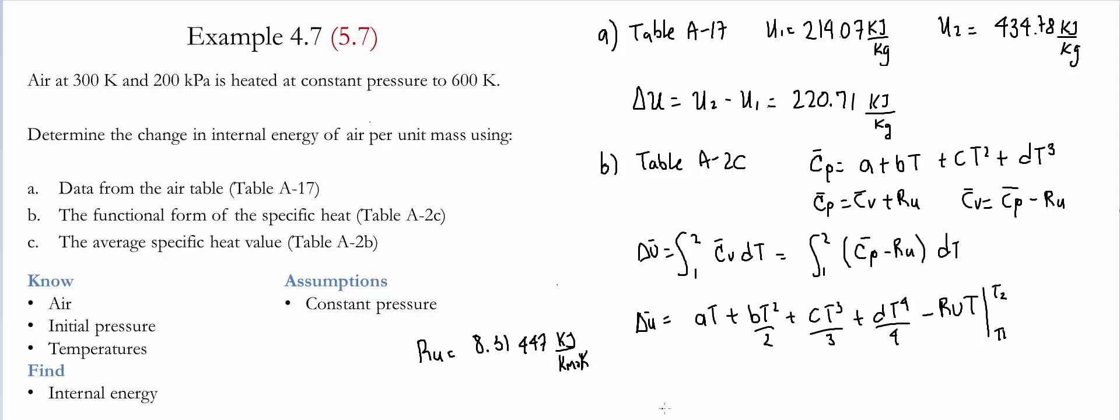If we now substitute the four different coefficients found in table A2C and the value of RU, which is given to be 8.31447 kilojoules per kilomole kelvin, we find that the change of internal energy on molar base is 6,447.01 kilojoules per kilomole.